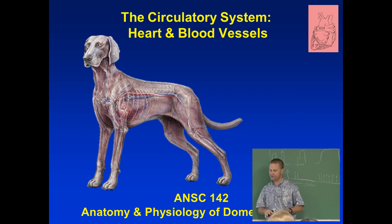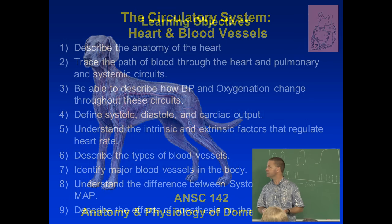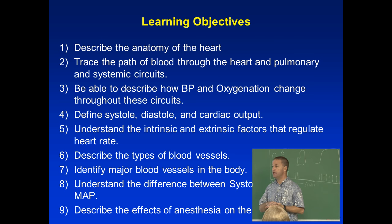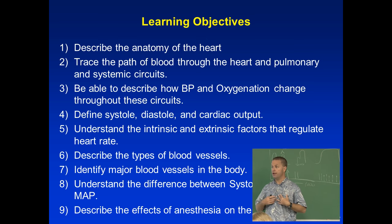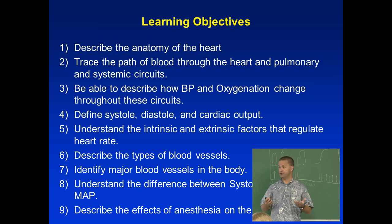Today we are shifting gears and continuing with our lecture on the circulatory system, specifically looking at the heart and blood vessels. We have a lot of learning outcomes to cover. One of the most important things I want you to be able to do is draw and diagram cardiac circulation — trace the path of blood through the heart and all the blood vessels, and explain how blood pressure and oxygenation change as we go through this loop.